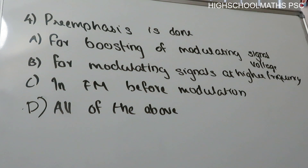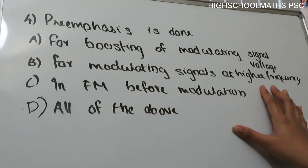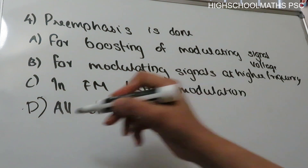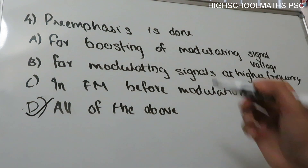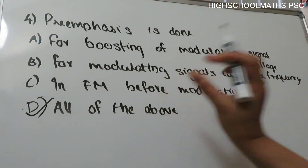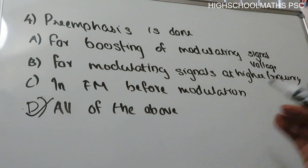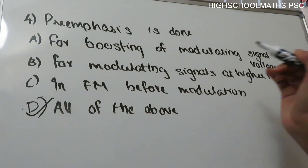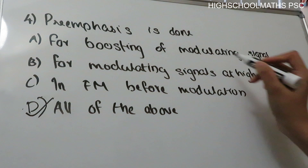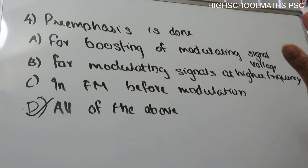Question 4: Pre-emphasis is done — option A: for boosting of modulating signal voltage, option B: for modulating signals at high frequency, option C: in FM before modulation, option D: all of the above. The answer is option D. Pre-emphasis is the process of boosting the higher frequency modulating signal voltage before FM modulation in the transmitter section.